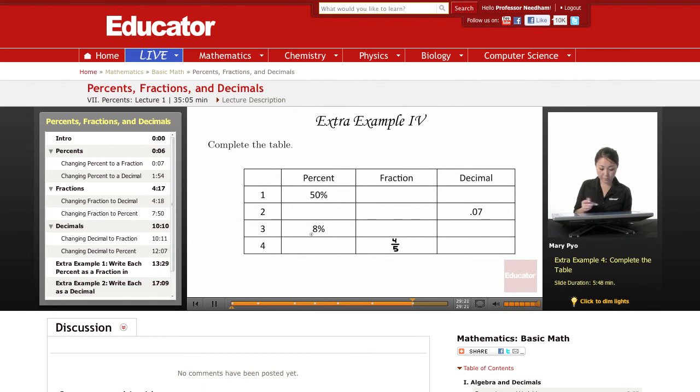Okay, so here we have a table. The first problem, 50%, I want to change it to a fraction and decimal. Same thing here. This is a decimal. I want to write this as a fraction and as a percent. So I'm just filling, I have to fill in all these, right?